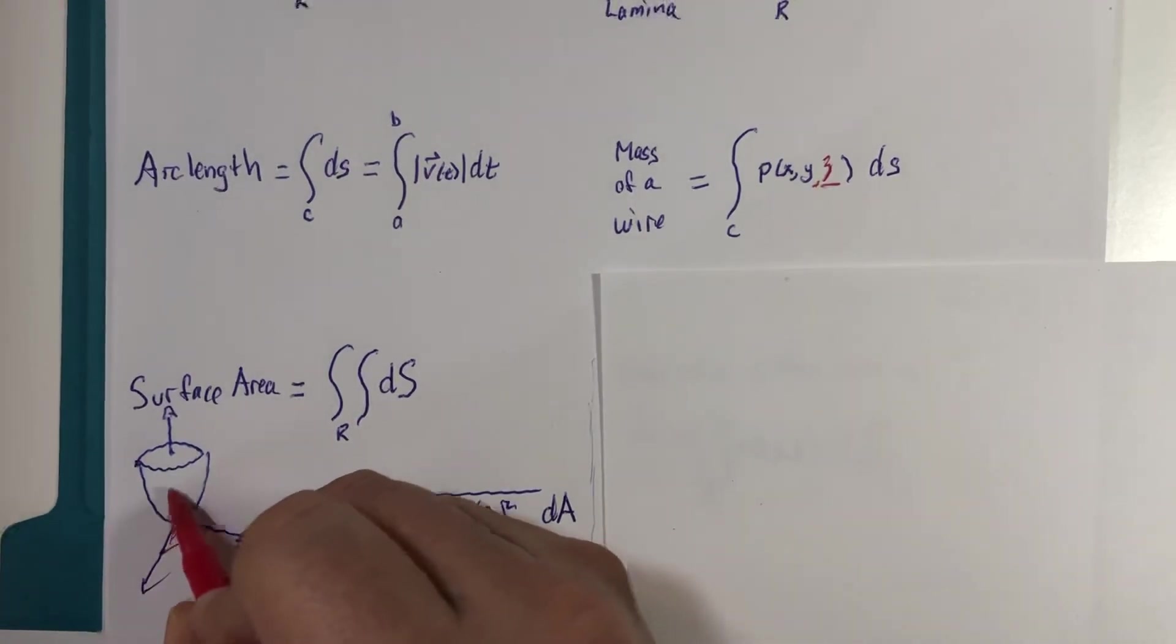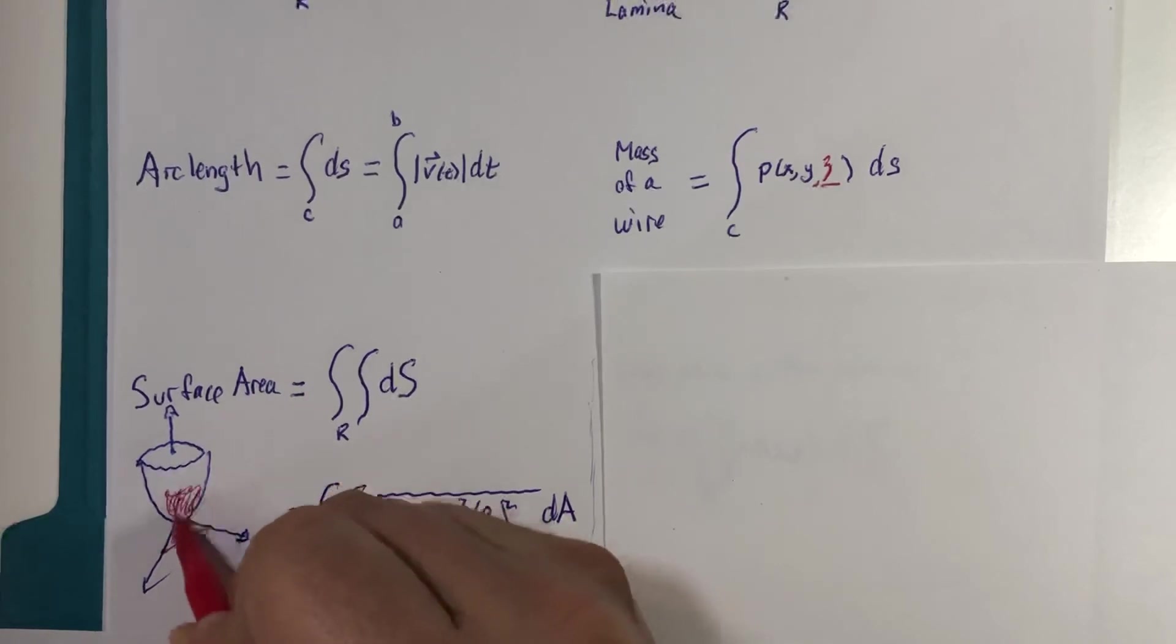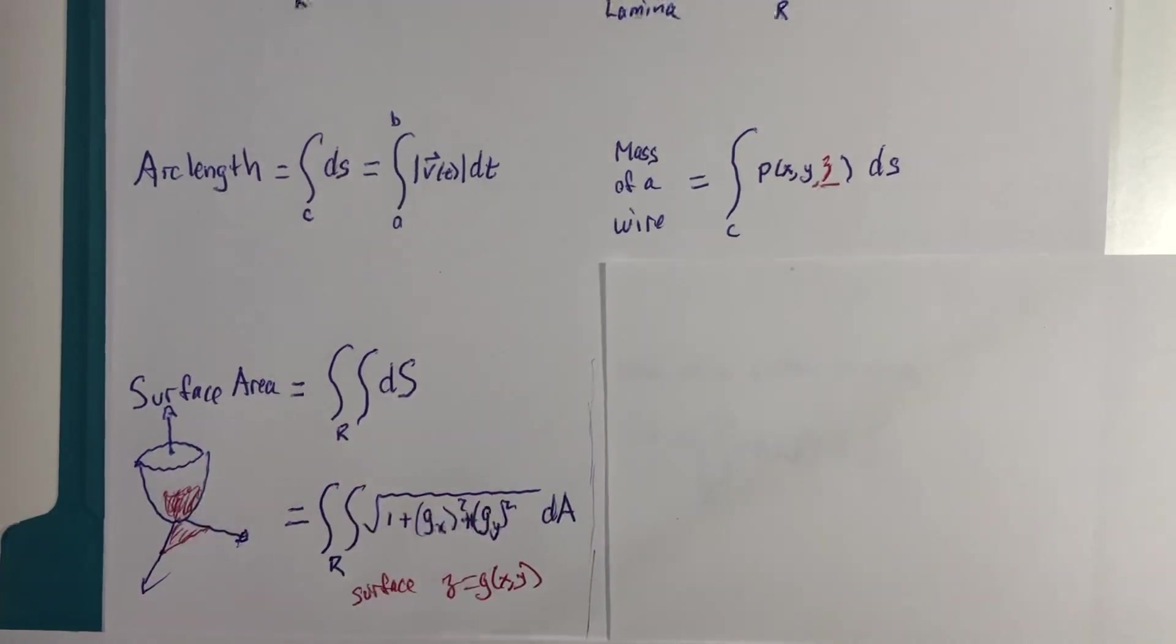above that region right there. What is the surface area? Think of that almost like casting a shadow onto a triangle. So that was our surface area formula from recently.